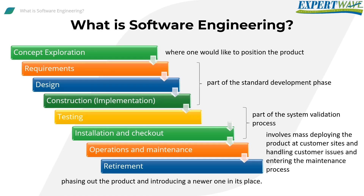Stages of software development could be: concept exploration — an area where one would like to position the product; requirements, design, and construction — part of the standard development phase; testing, installation, and checkout — part of the system validation process; operation and maintenance — deploying the product at customer sites and handling customer issues; performing enhancements and fixes when needed; and retirement — phasing out the product and introducing a newer one in its place.